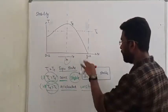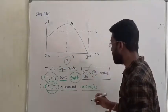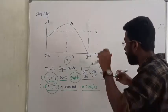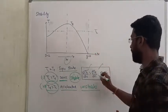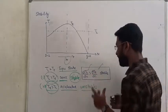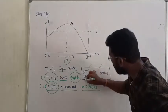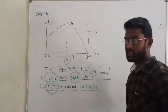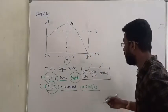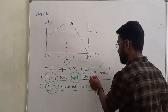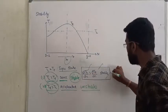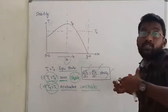The speed variation shows that my load torque keeps on varying with respect to speed, and electromagnetic torque also keeps on varying with respect to speed. But the resultant condition is: the rate of change of load torque with respect to speed must be greater than the rate of change of electromagnetic torque with respect to speed. In that condition, the system will be more and more stable.